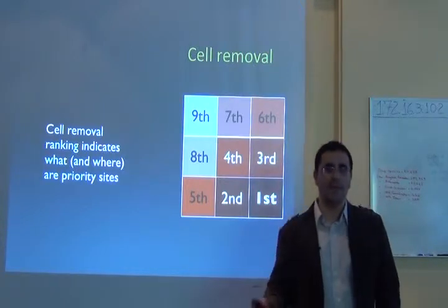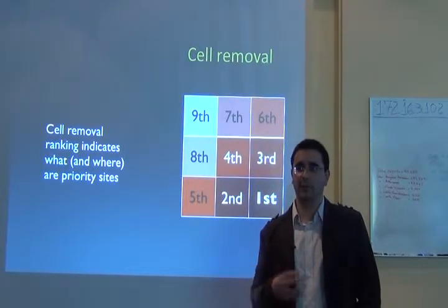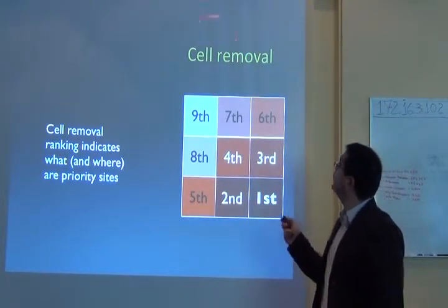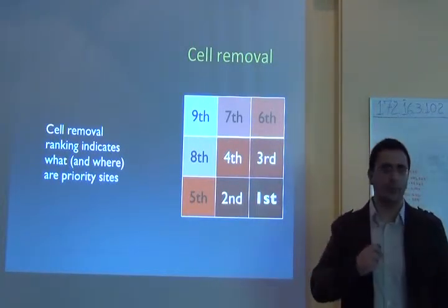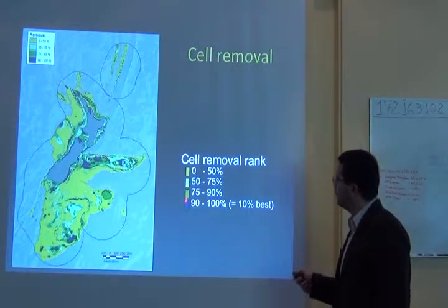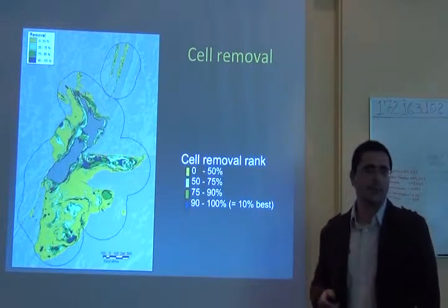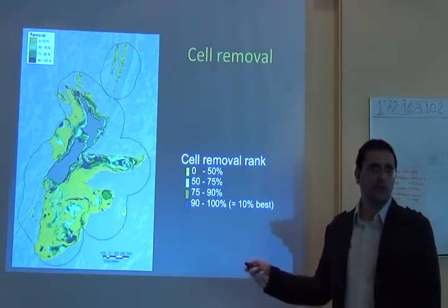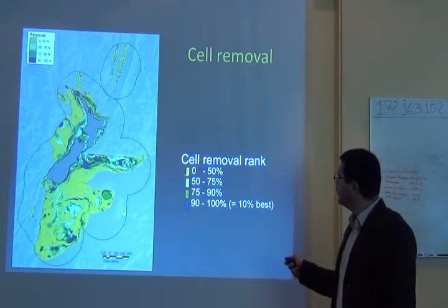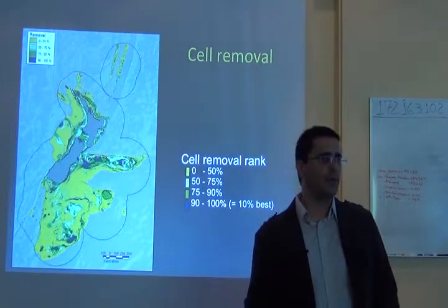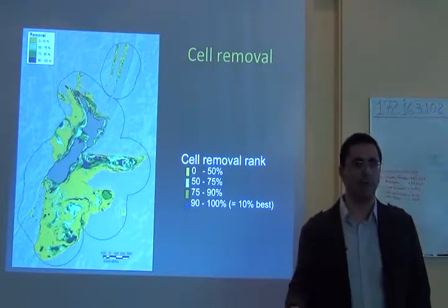Of course, you will have many species occurring in the same cell, and as a nation you need to decide what to do — there are some rules to remove the cell. After running the algorithm, you get a rank: cells removed last are the most important, cells removed first are the least important. Then you have a rank of priority and can establish your conservation priorities.